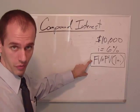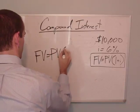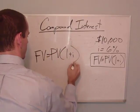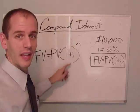Just take our simple interest formula right here. And put an exponent right there. That's the number of periods.